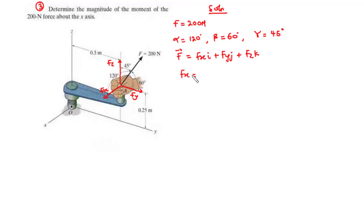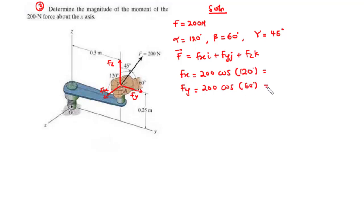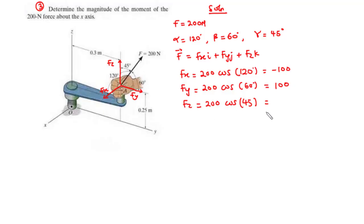We have Fx equal to the magnitude of the force, 200 newtons, times cosine of angle alpha, which is 120. We have Fy equal to the magnitude of the force times cosine of angle beta. And Fz equal to 200 times cosine of angle gamma, which is 45. So 200 cos 120 is negative 100, 200 cos 60 is 100, and 200 cos 45 is 141.42.